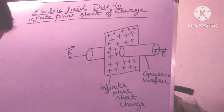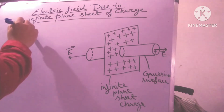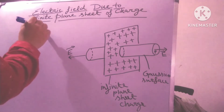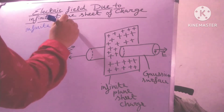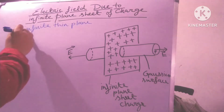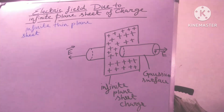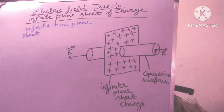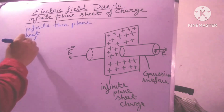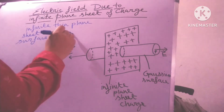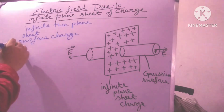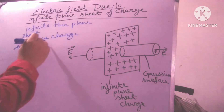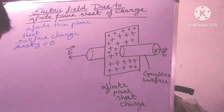Consider an infinite thin plane sheet of positive charge having a uniform surface charge density sigma.